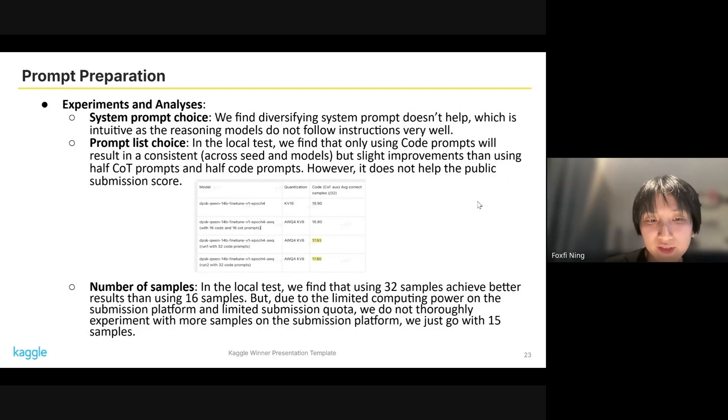For number of samples, in the local test, we found that continuing to increase the sample number will help achieve better results than only using 16 or 15 samples. But due to the limited computing power in the submission platform and our limited submission quota, we did not thoroughly experiment with the best choice of the sample number on the online platform. We just went with 15 for most of our submissions.